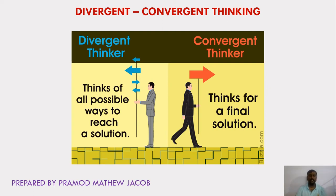In divergent thinking, the thinker will think about all possible ways to reach a particular solution — going through all possible ways or methods to solve that particular problem. Whereas in convergent thinking, the thinker will always think for a particular, well-defined final solution.